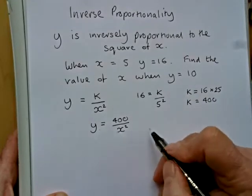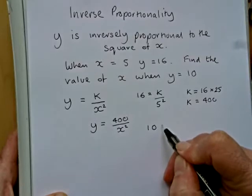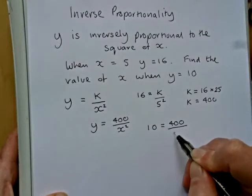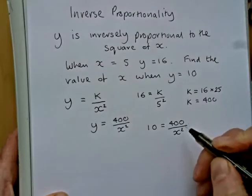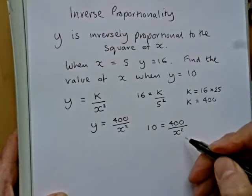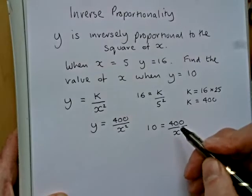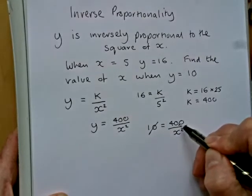So, we replace y with 10, and we say that 10 equals 400 over x squared. So, we can swap the x squared and the 10 around, or we could cancel the zero there and the zero there.